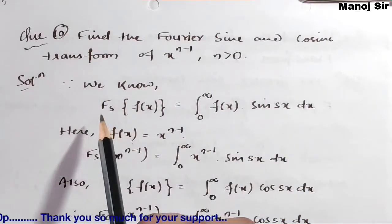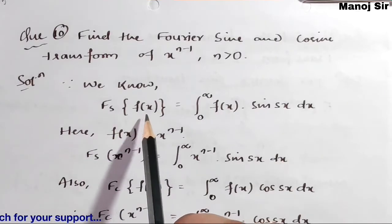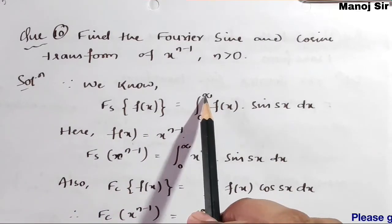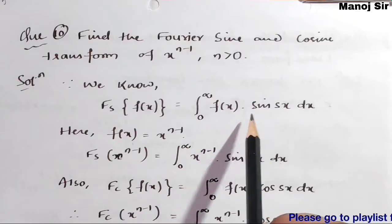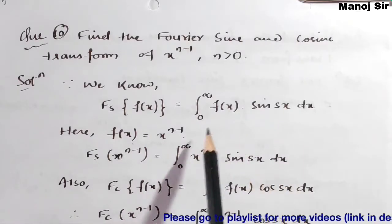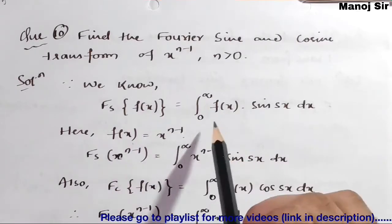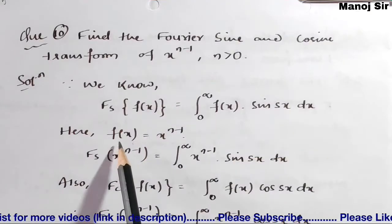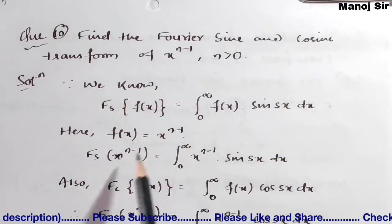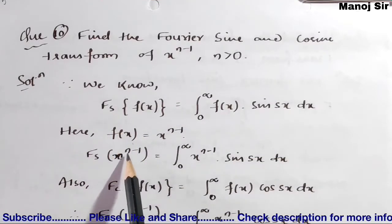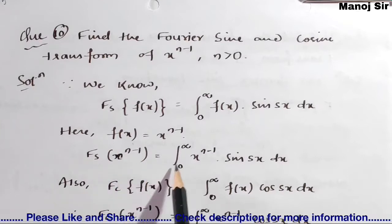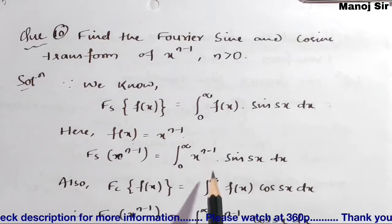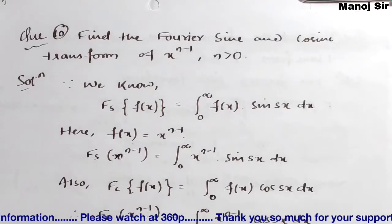Since we know that the Fourier sine transform of f(x) equals the integration from 0 to infinity of f(x) sin(sx) dx. Here f(x) equals x to the power n minus 1. So the Fourier sine transform of x^(n-1) becomes the integration from 0 to infinity of x^(n-1) times sin(sx) dx.